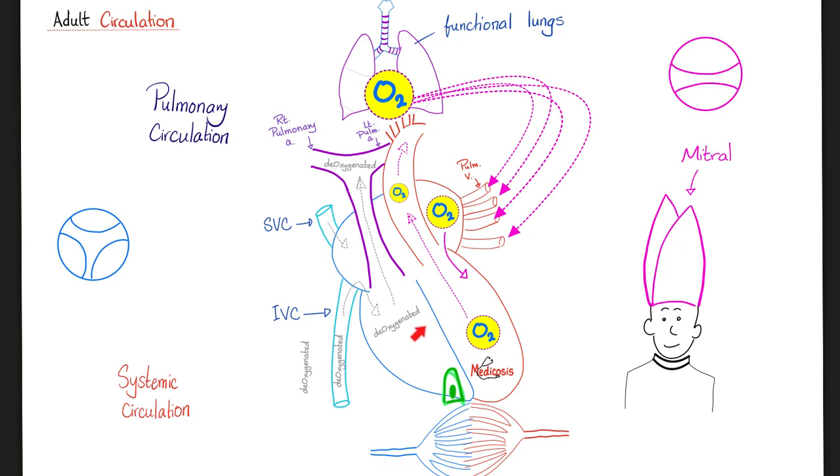Right ventricle is going to pump this deoxygenated blood into the pulmonary artery. This is the pulmonary trunk. Right pulmonary artery, left pulmonary artery. To the right lung and the left lung. The lung will take the carbon dioxide, breathe it out. And then, breathe oxygen in. Lovely oxygenated blood. Bring it to pulmonary veins into the left atrium. If your heart rate is 100 beats per minute, this is happening 100 times every minute.